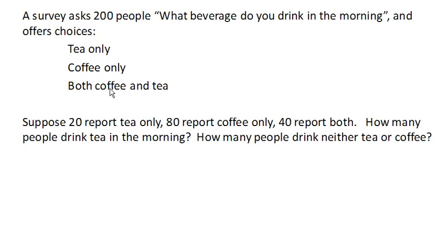To do this, we're going to use a Venn diagram, because it gives us a nice way to picture what's going on. So we're going to imagine the universal set. This is everybody. Remember, there's 200 people in this set.